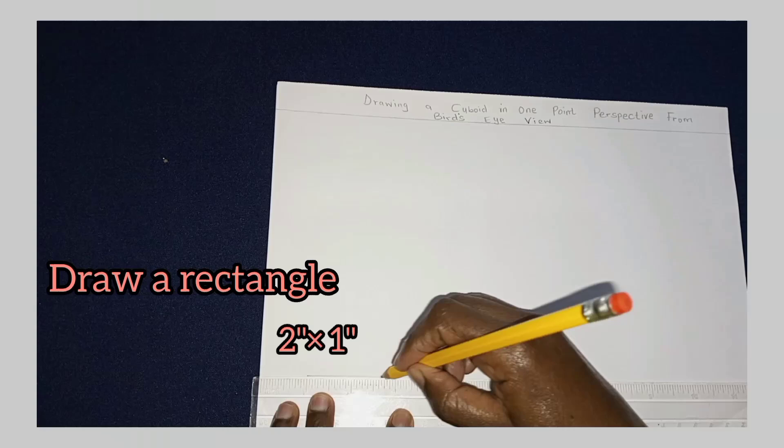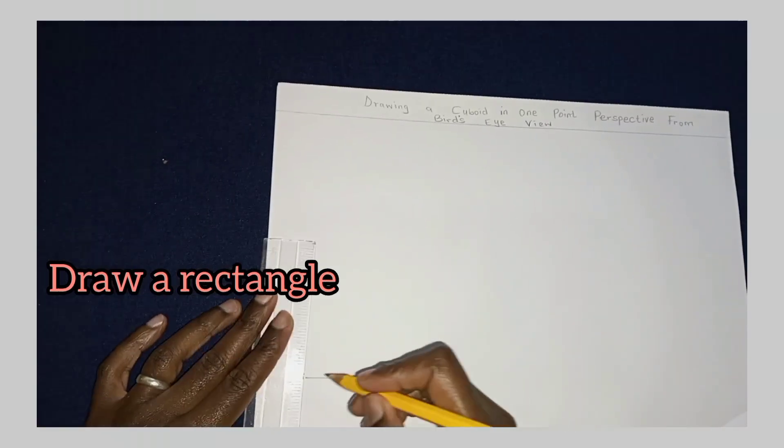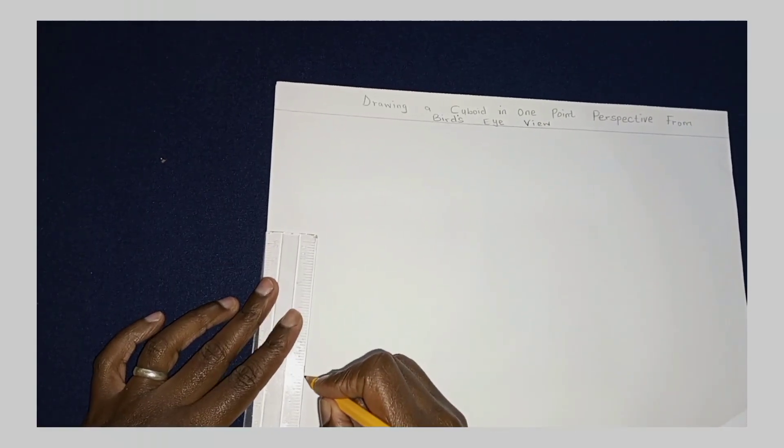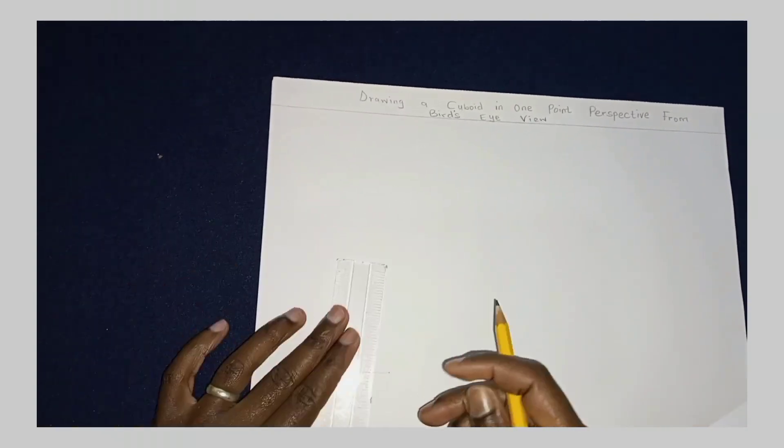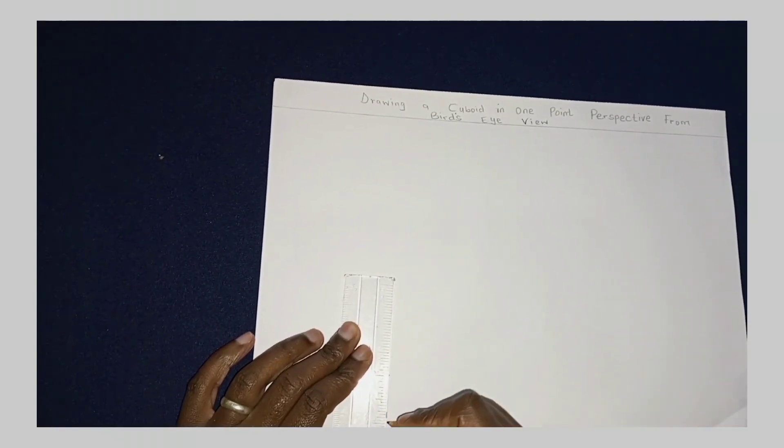We begin by drawing a rectangle which represents the face of the cuboid that is nearest to you, and the measurements for this rectangle is two inches by one inch.